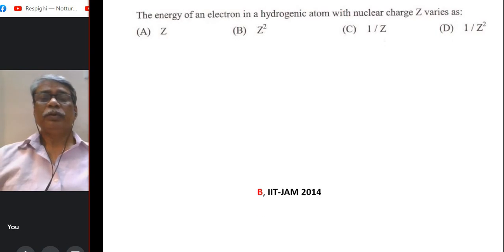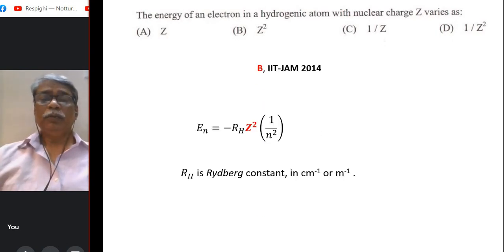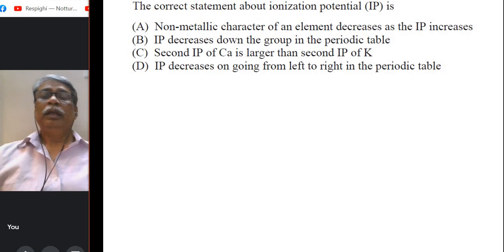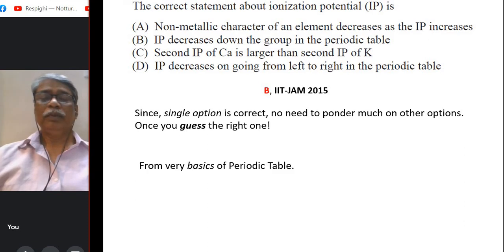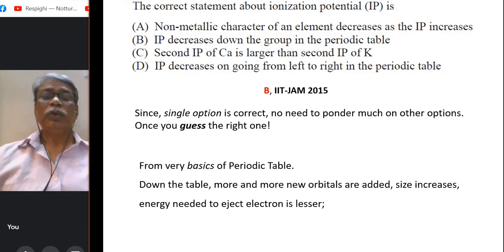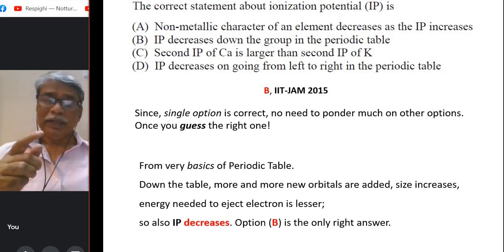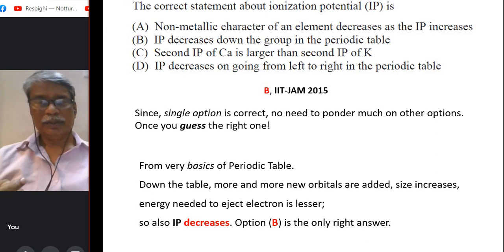This is also an informative question, you have to remember the formula for E_n which is clearly proportional to Z². Fine. The correct statement about ionization potential is, so you know these are very basic questions from periodic table. Here you know going down the table more and more new orbitals are added, so size increases and energy needed to eject electron is lesser. So IP decreases. So option B is the only right one.